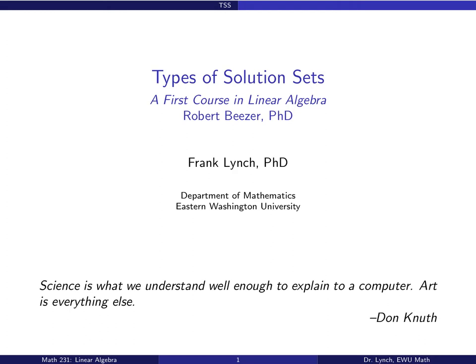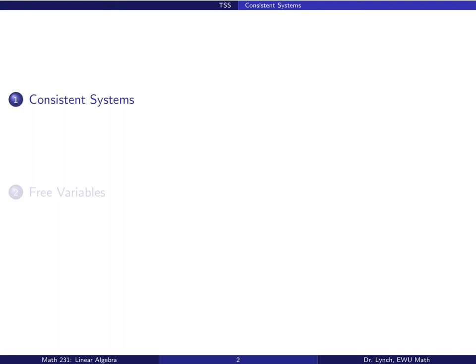Don Knuth said that science is what we understand well enough to explain to a computer, and art is everything else. I really like this quote, particularly as it pertains to this section, because in this section we're very methodical in determining when a linear system has a set of solutions and when that solution is unique. We'll see how that shakes out from the reduced row echelon form. We'll start off with a discussion of consistent systems and then talk about free variables in such systems.